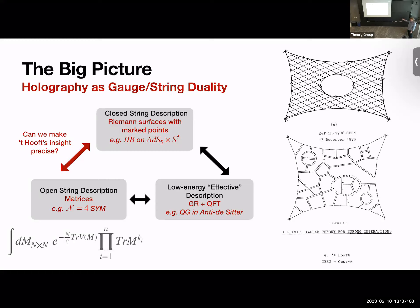The real question we're going to address is: can we make this intuition precise? We want to start from the gauge theory — just Feynman diagrams — and translate large-N Wick contractions and their combinatorics into sums over 2D surfaces. To understand large-N Wick contractions, we study the simplest possible example: a zero-plus-zero dimensional theory, an integral over a matrix. The CFT is specified by a choice of potential, and the observables are traces of M to the k's — endpoint functions are products of these traces.